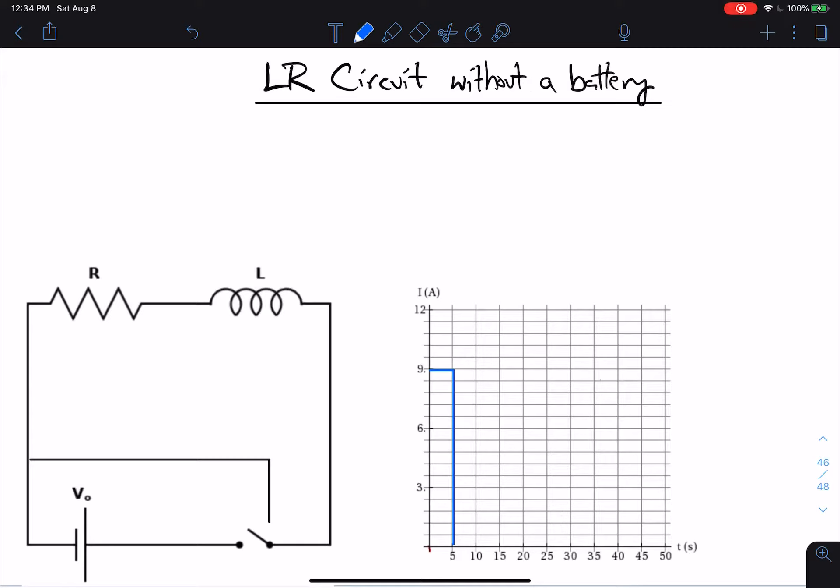But if you do have an inductor, it's going to resist this change. And what you are actually going to get is exponential decay. So that's going to look like this. We're going to have exponential decay. Let's say we start at nine amps. It's going to look something like that.